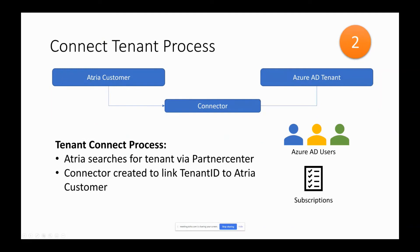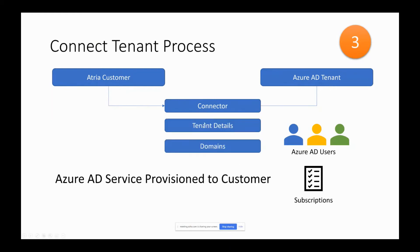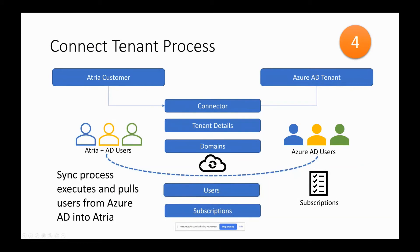You create the Atria customer and then run the tenant connect process — you search for a tenant via the Partner Center API. When you pick that customer, it creates a connector which links the tenant ID of the Azure AD tenant through to the Atria customer. It retrieves the tenant details and domains back into the Atria customer. Subsequently, when we run the sync process, it will retrieve all the users and create them in the Atria customer, along with the subscriptions. The end result is that all users are provisioned with plans within Atria and from that point on you can manage them, assign licenses, and make changes.